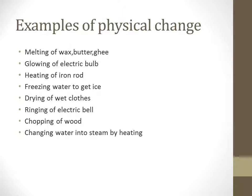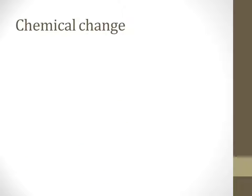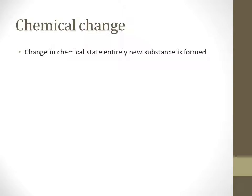Now, coming to a chemical change — the name itself says that it is a chemical change. A chemical change is a change in which the chemical state changes and an entirely new substance is formed. Unlike a physical change where no new substance is formed and there is no change in chemical state, in a chemical change the chemical change takes place and a new substance is formed.